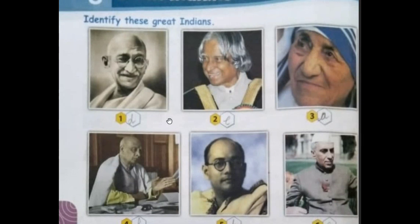The first one is Mahatma Gandhi. He was born on 2nd October 1869 in Porbandar, Gujarat. He is known as the Father of the Nation, so we will write D here.